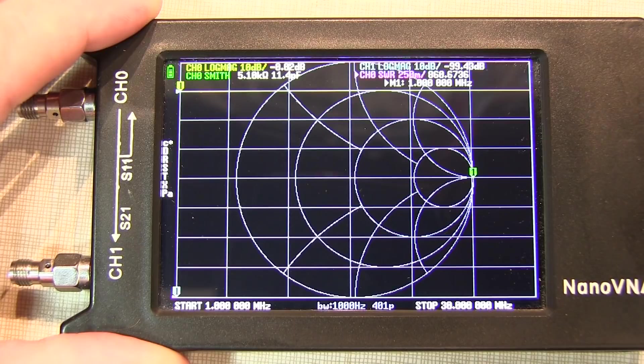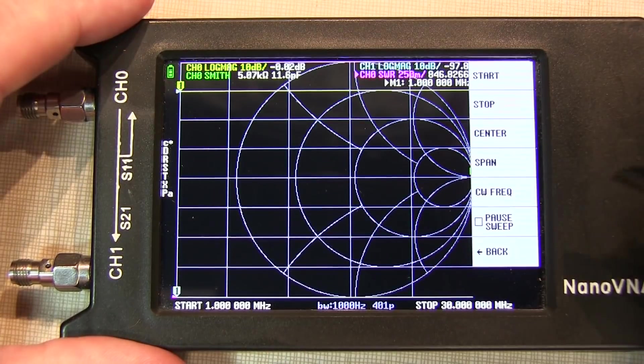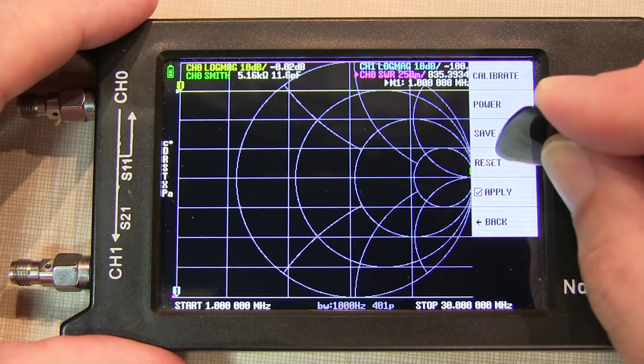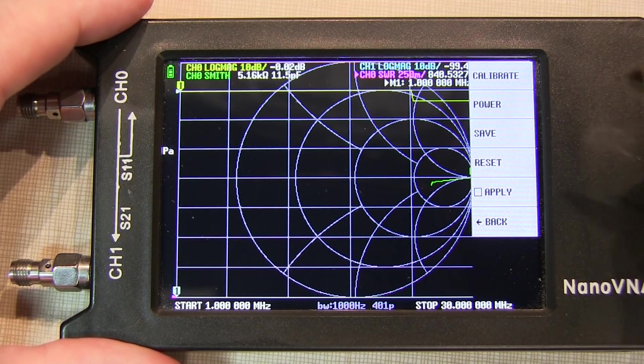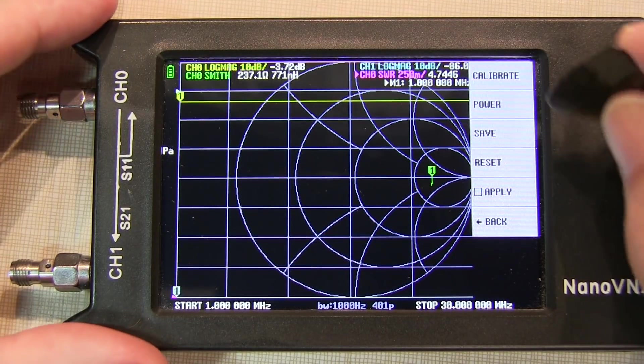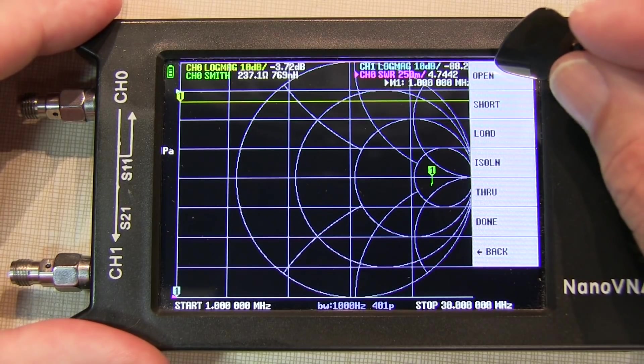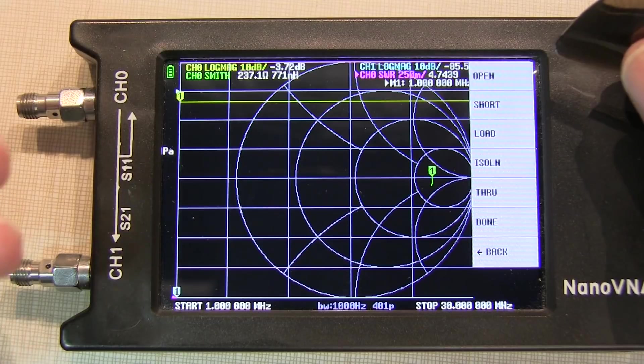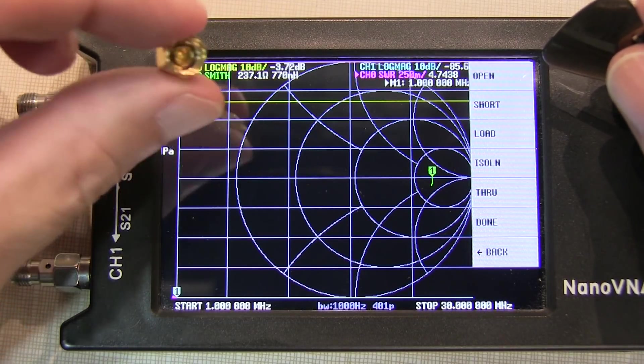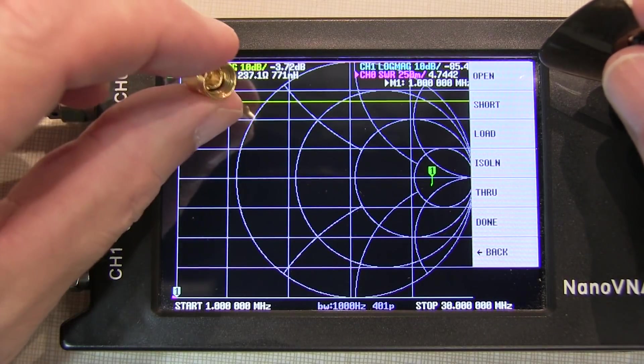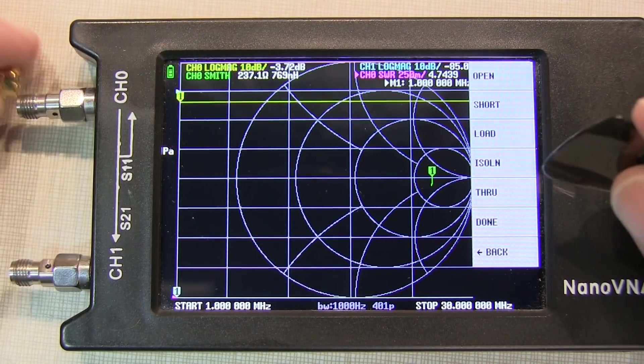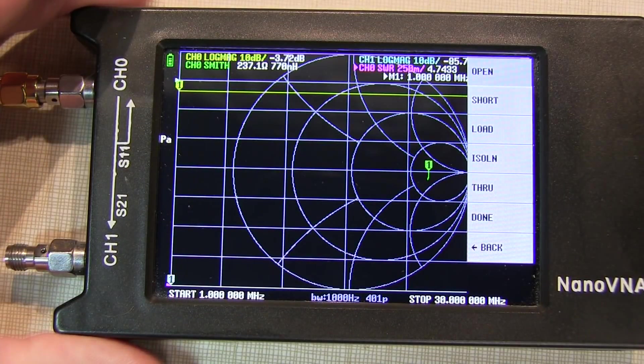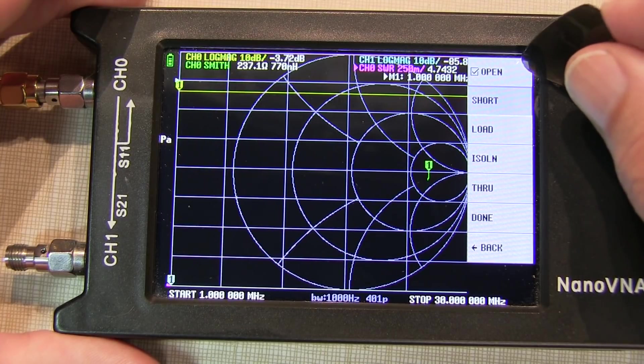The next is to run the calibration. To run the calibration, we'll go back, hit calibrate, and hit reset to kind of start from scratch, and then we hit calibrate, and the first thing it's asking for is the open. So we'll attach our open to the input port, and that's the SMA that looks like an empty bucket in there. There's no pin or anything like that. That's our open. We'll connect that up and hit open.